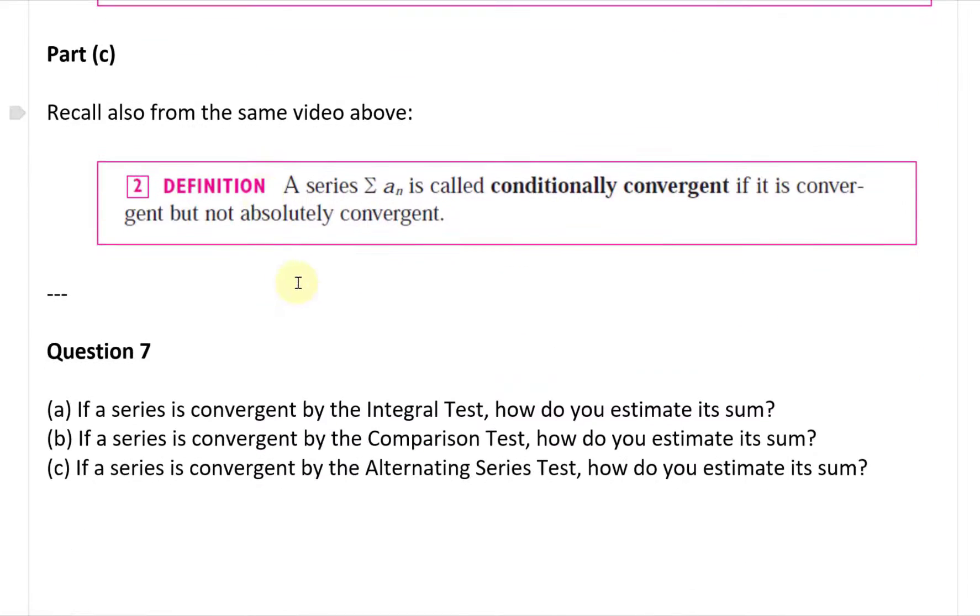Recall from the same video above, definition: a series, summation of aₙ, is called conditionally convergent if it is convergent but not absolutely convergent.